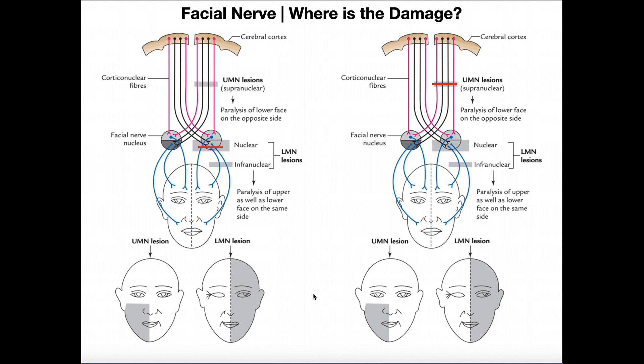Taking a 30,000-foot view: if we have a lower motor neuron lesion of the facial nerve, the entire half of one side of the head and face is going to be drooping — same side as the lesion. A left lower motor neuron lesion produces droopage of the entire left half of the face and head, including the forehead. A right lower motor neuron lesion does the same on the right side. Lower motor neuron lesion: entire ipsilateral side, same side as the lesion.